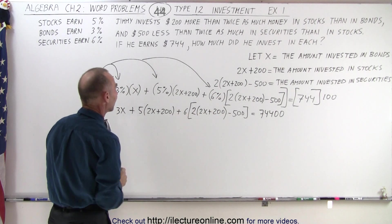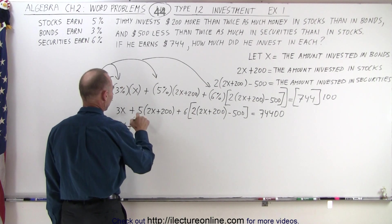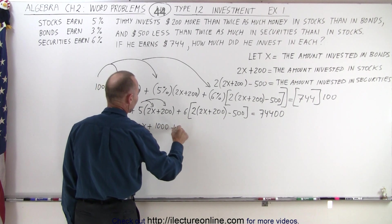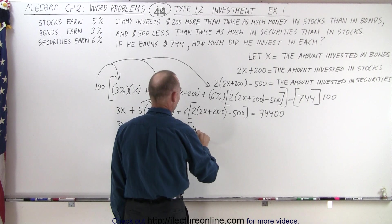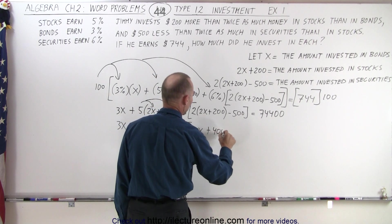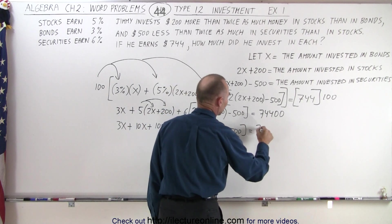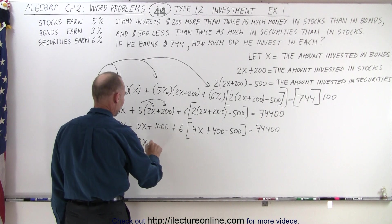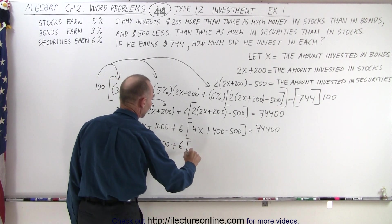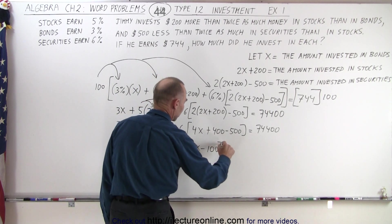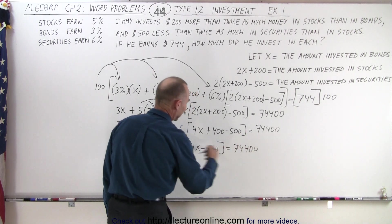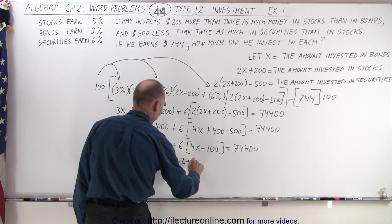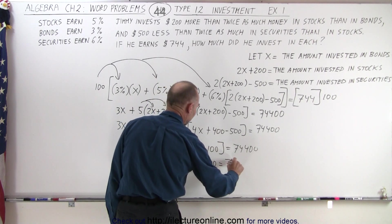Now we need to get rid of the parentheses and brackets. That gives us 3x plus 10x plus 1,000 plus 6 times [4x plus 400 minus 500], which equals 74,400. Simplifying a little more, we can combine to get 13x plus 1,000 plus 6 times (4x minus 100). Finally, getting rid of the brackets, we end up with 13x plus 1,000 plus 24x minus 600, equals 74,400.